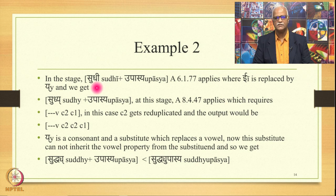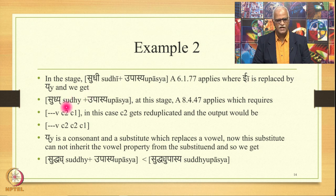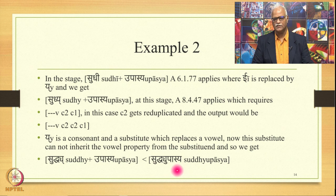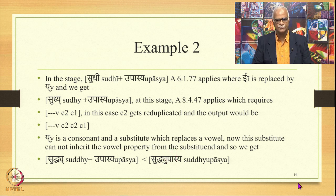Now Y here is a consonant but it is a substitute which has replaced the vowel E. This substitute cannot inherit the vowel property from the substituent E. Sthanivat Adesha Analvidhav says the properties of the Sthani get inherited by the substitute — but Y cannot get the property of being a vowel from its substituent E because this is based on the property of an individual sound. Therefore Y remains a consonant, 8.4.47 applies, and we get Su Dha Dha Ya Upasya, finally yielding Suddhyupasya. This is a patent example from the Sandhi Prakarana of the Vaiyakarana Siddhanta Kaumudi.